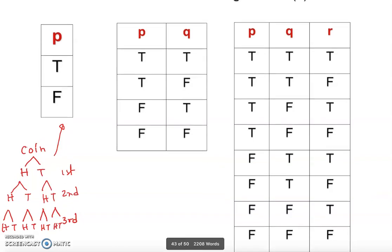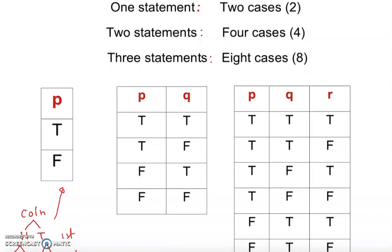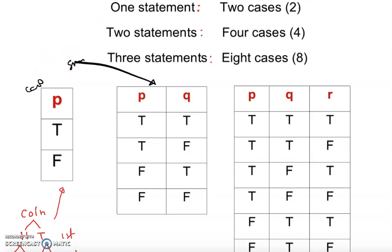To summarize: one statement gives two cases. If you have P and negation-P (not-P), that is still one statement — just like saying 'I go to college' and 'I don't go to college.' But if you have capital P and a different lowercase letter — two different letters, two different statements — then you have four cases. I hope you understand how to construct the base of a truth table. Thank you.